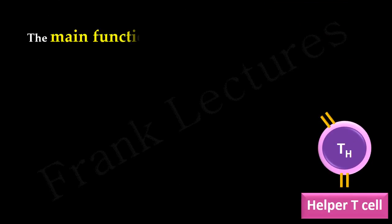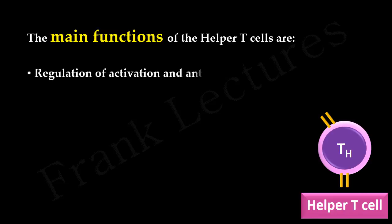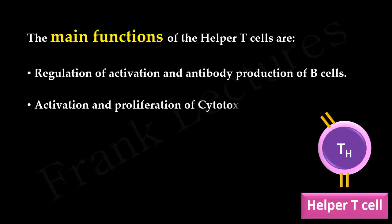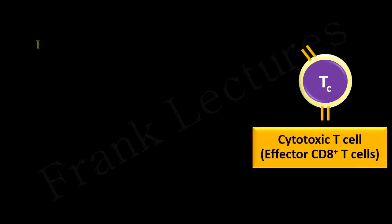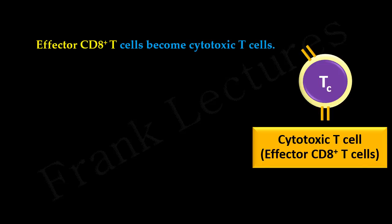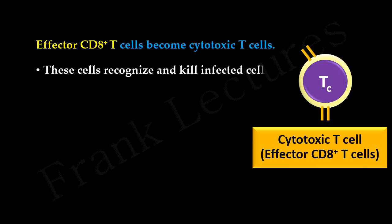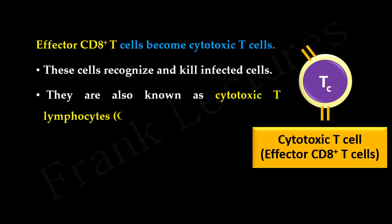The main functions of helper T-cells are: regulation of activation and antibody production of B-cells, activation and proliferation of cytotoxic T-cells, and activation of macrophages and natural killer cells. Effector CD8 positive T-cells become cytotoxic T-cells. As the name indicates, these cells recognize and kill infected cells. They are also known as cytotoxic T-lymphocytes, abbreviated as CTLs, or killer T-cells.